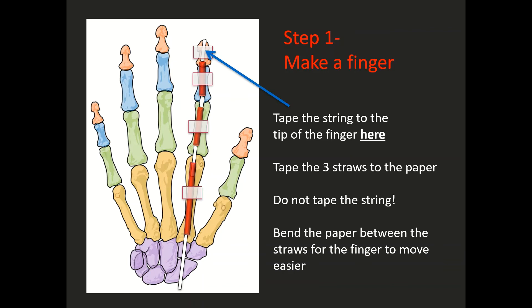So that red area of the fingers does not actually get a bone in it in the activity — that is where your string is going to be taped to the finger. And you're also going to tape the three pieces of straw to three sections of bone on the hand. Very important: once again, do not tape the string, otherwise your hand won't move properly.